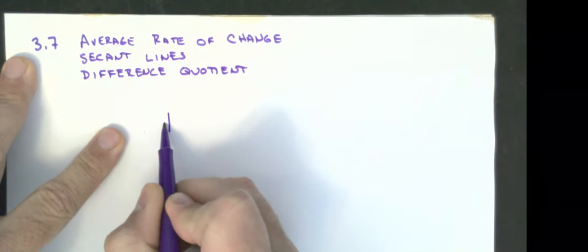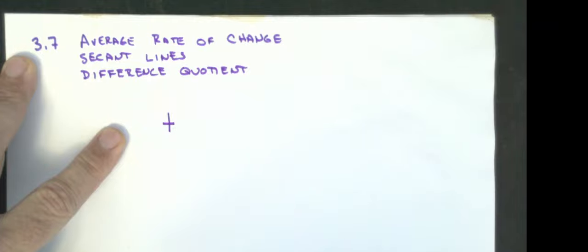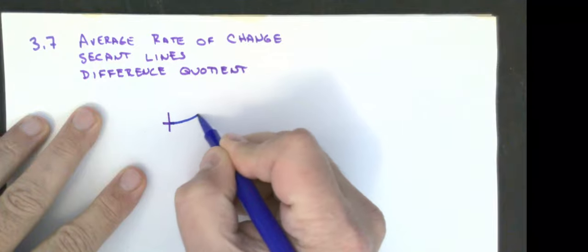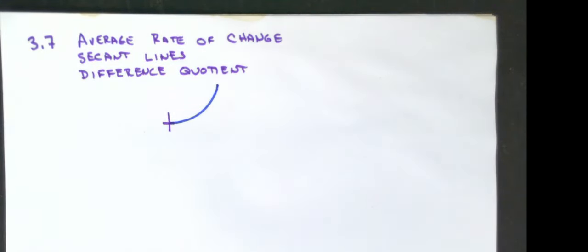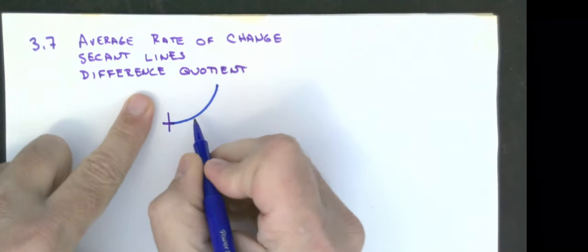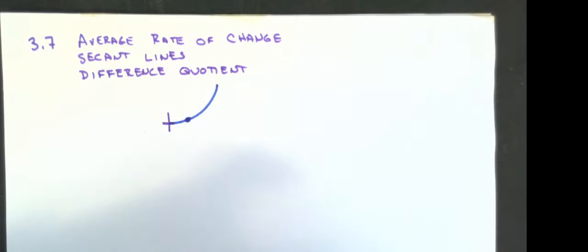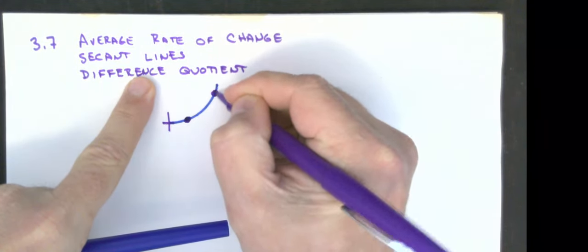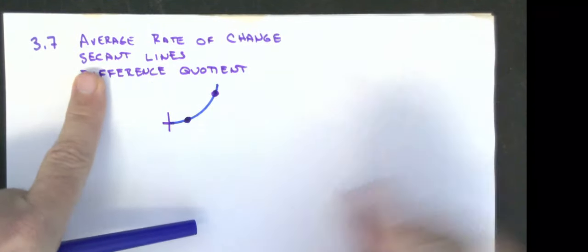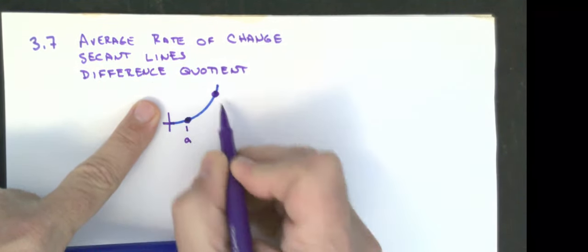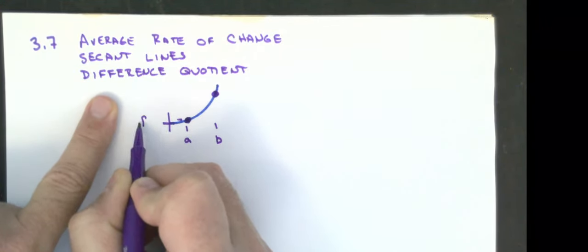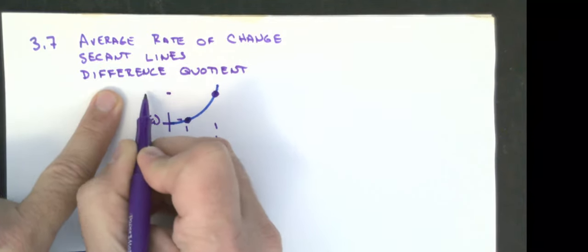I'm going to draw an arbitrary graph of a function — it's going to look something like y equals x squared. For the average rate of change, I'll pick two points: I'm going to call this x equals a and that x equals b. This value here is going to be f of a, and this value over here is going to be f of b.